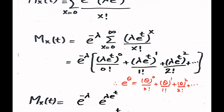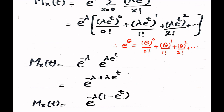We recognize the Taylor series expansion: e^θ = θ^0/0! + θ^1/1! + θ^2/2! + ... Comparing our series with this formula, where θ = λe^t, the entire sum equals e^(λe^t). Therefore, the MGF becomes e^(-λ) · e^(λe^t).